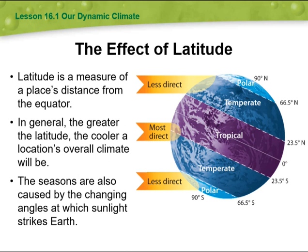Then we have the effect of latitude, shown here as less direct, most direct, and less direct sunlight. Latitude is a measure of a place's distance from the equator. In general, the greater the latitude, the cooler the location's overall climate will be.